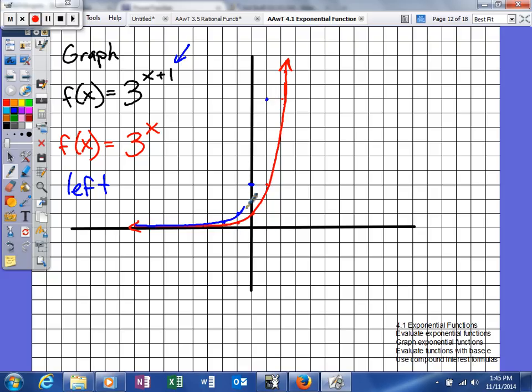So when we shift our graph left 1, our graph will look a little something like that. It doesn't change the shape of the graph, it only moves it left or right.